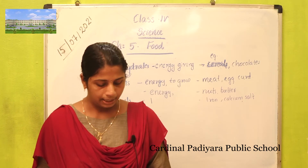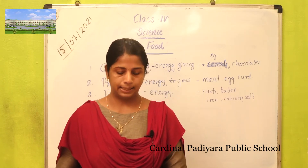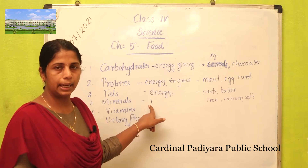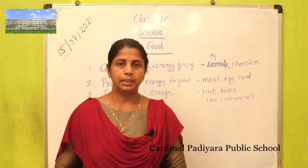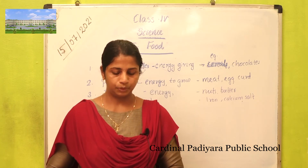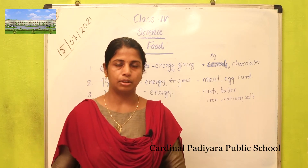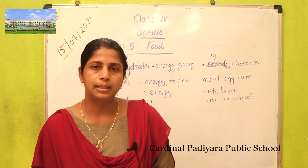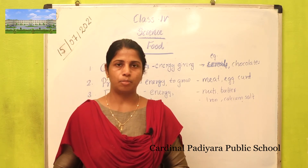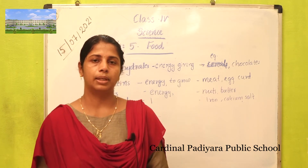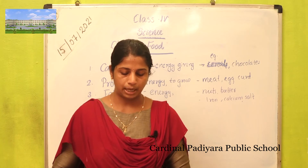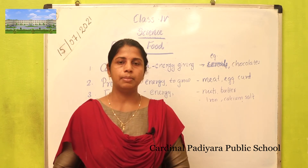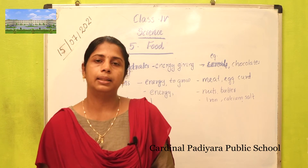Vitamins — we have vitamin A, B, C, D, and K. These help our bones and skin stay healthy. Vitamin A is found in papaya, carrots, and mango. Vitamin B is found in rice and wheat. Vitamin C is found in orange, tomato, lemon, and amla. Vitamin D is found in milk, liver, egg, and fish.